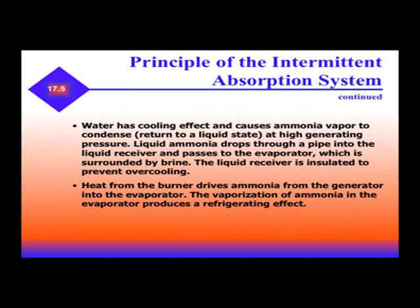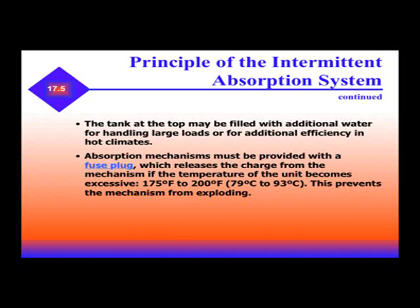The liquid receiver is insulated to prevent overcooling. Heat from the burner drives the ammonia from the generator into the evaporator. The vaporization of ammonia in the evaporator produces a refrigerating effect. The tank at the top may be filled with additional water for handling large loads or for additional efficiency in hot climates. Absorption mechanisms must be provided with a fuse plug, which releases the charge if the temperature becomes excessive — around 175 to 200 degrees — preventing the mechanism from exploding.